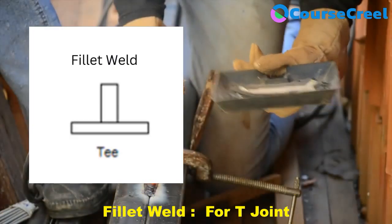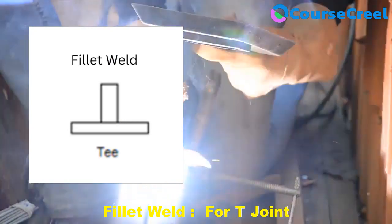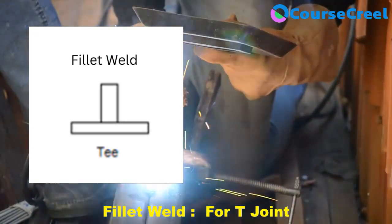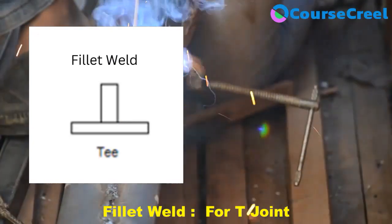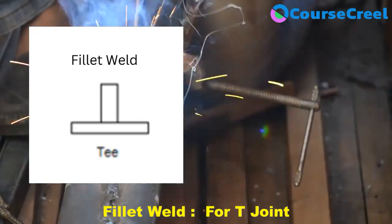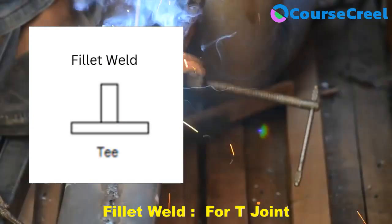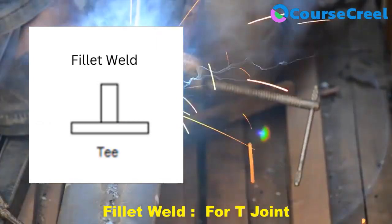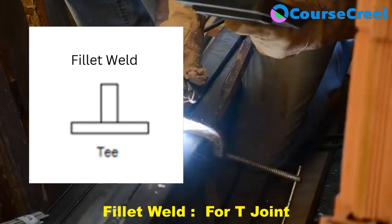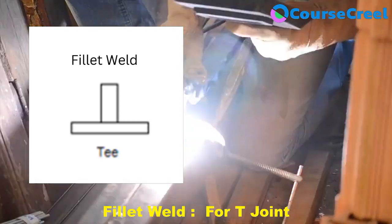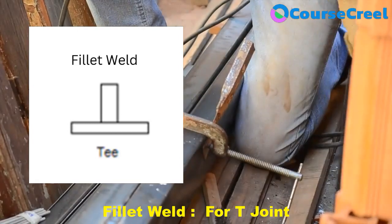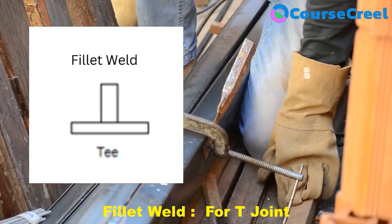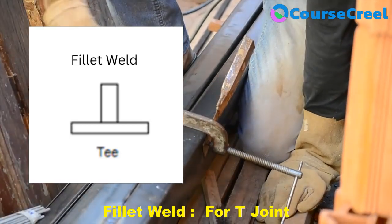For fillet weld joints, T joints are typically welded using fillet weld joints. The fillet weld joint has a very extensive description and cannot be covered fully in this lesson, so in the next session we will discuss fillet weld joints in detail.